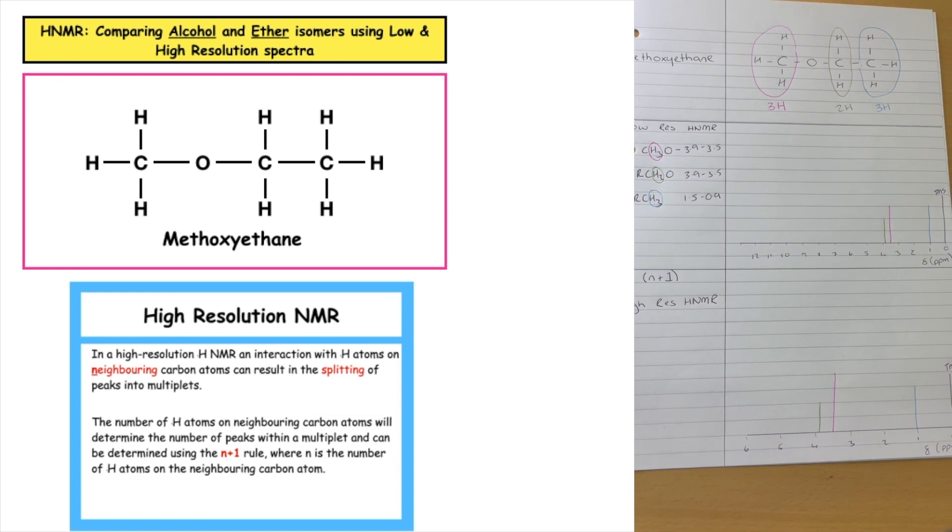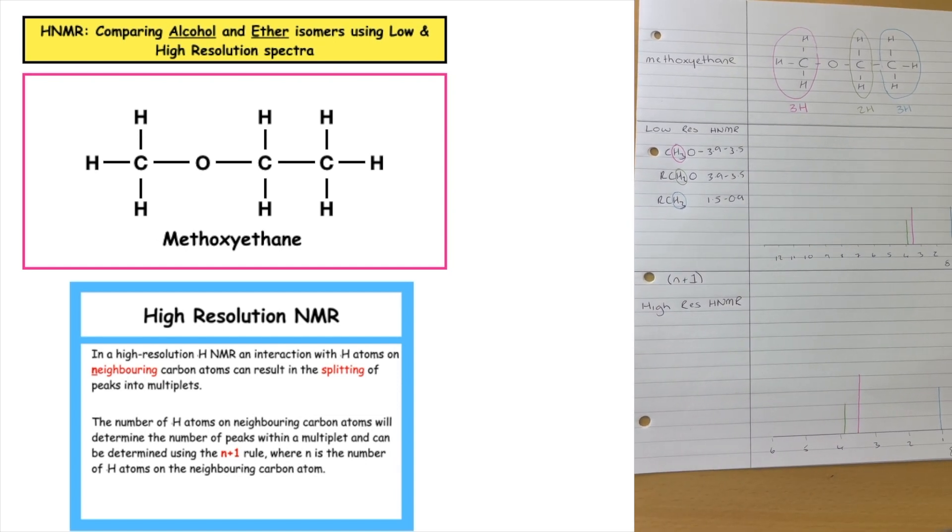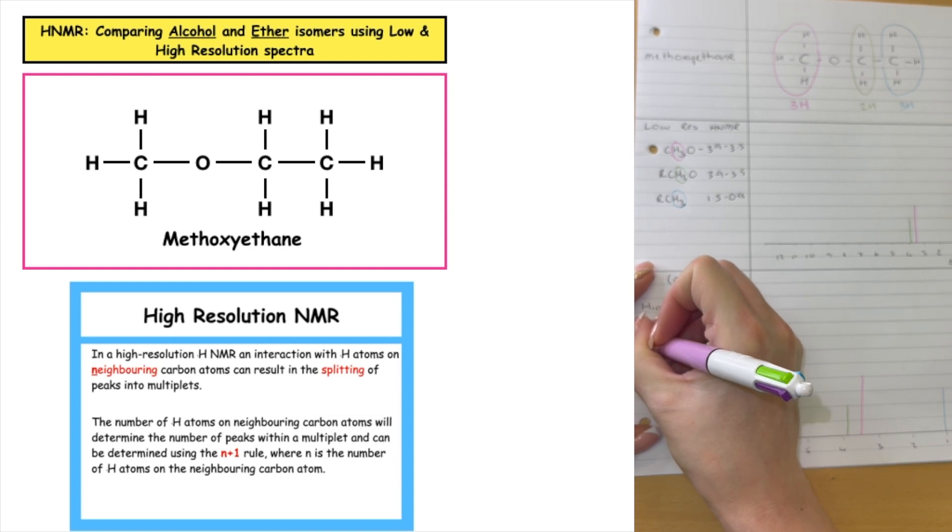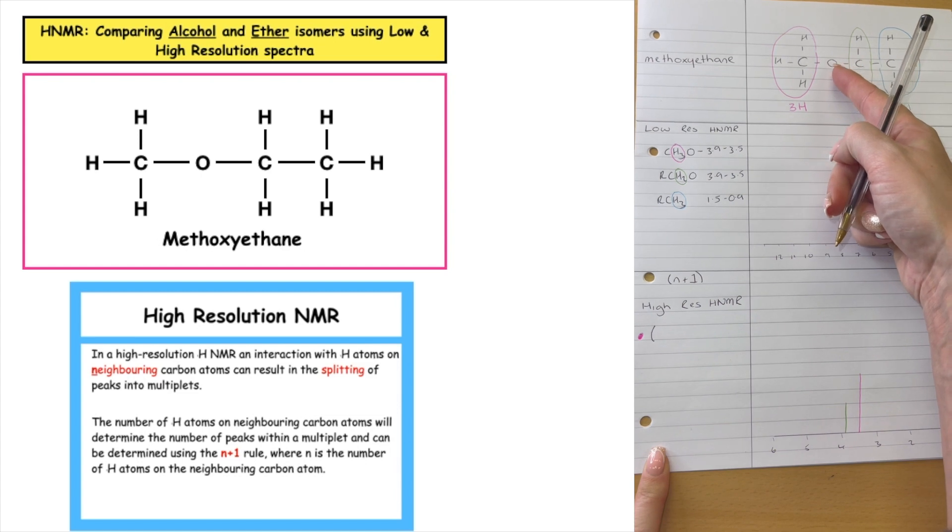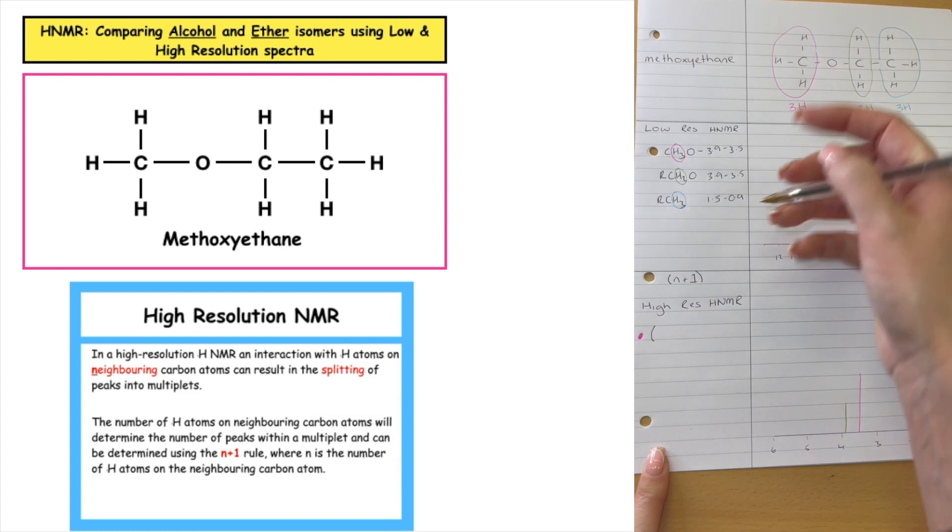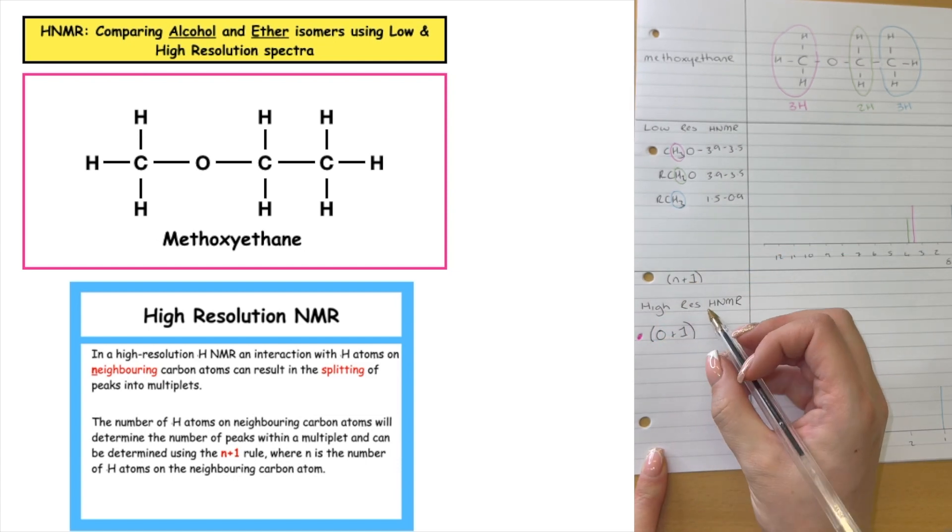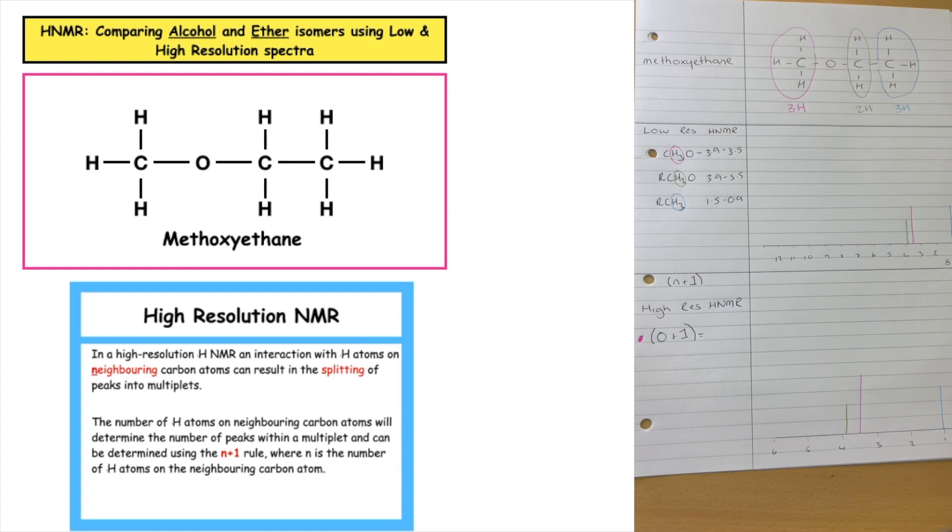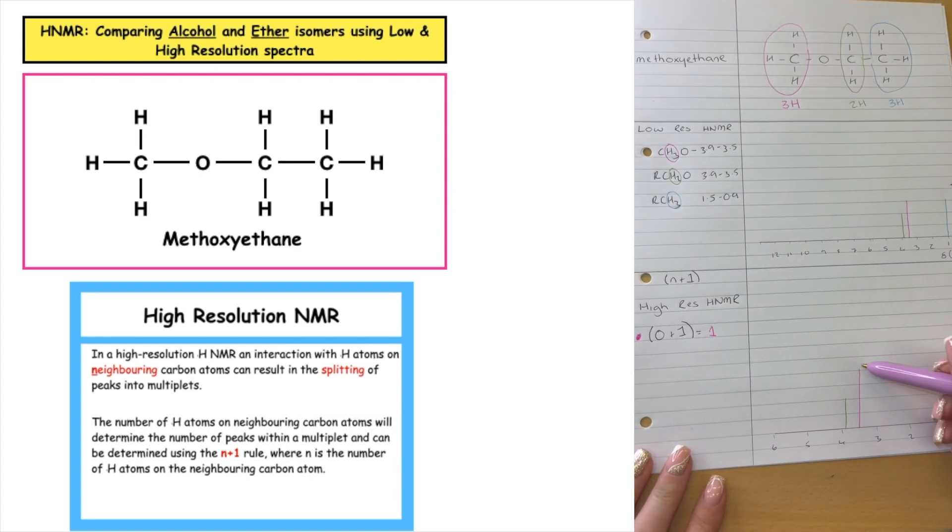So we've got three different environments. I have got my pink house. And for my pink house, I'm looking at the next door neighbor. Can you see that I've got oxygen? There's no hydrogens in that environment. So I would do 0 plus 1, and that would be equal to a split of 1. So it's a singlet. So that would just stay as it is.